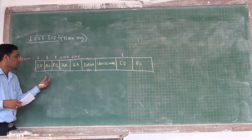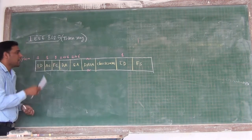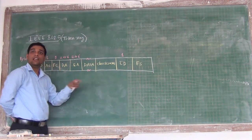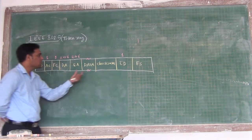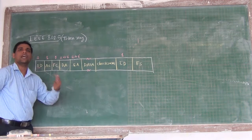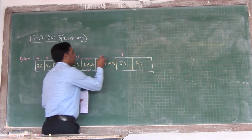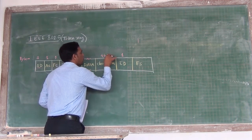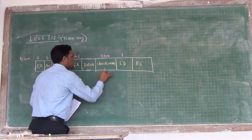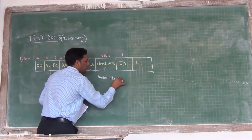Surprisingly, there is no limit on the data in IEEE 802.5. Whatever standards we studied so far — in 802.3 and 802.4 — there were limits on the data. But in this case there is no limit. A station can transmit as much data as it wants. The checksum is of size 4 bytes and is used to detect errors.